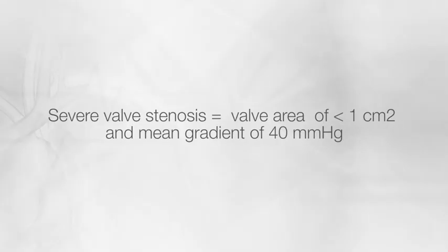Diagnosis is often suspected based on physical examination and can be confirmed by transthoracic echocardiography. By echocardiography, we're able to determine the heart size and function, and also quantitate the degree of stenosis. We're able to calculate a valve area and a mean transvalvular gradient. A valve area less than 1 cm² and a mean gradient greater than 40 mmHg is generally considered severe. In select cases, we also use cardiac CT or cardiac catheterization to better understand the severity of narrowing.